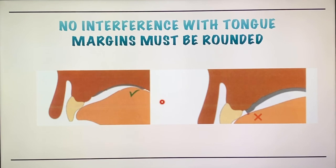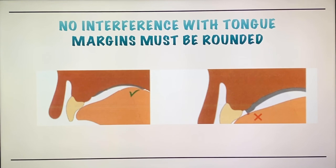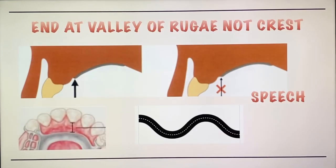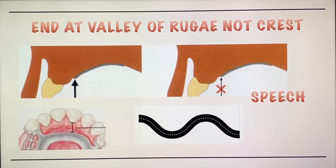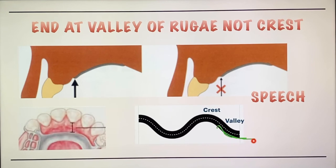There should be no interference with the tongue. Our tongue goes toward sharpness or when something is stuck — so if our assembly has sharp angles, the tongue will get constantly irritated, which we don't want. That is why the margins must be rounded. Our major connector must end at the valley of the rugae, not the crest. If possible, try not to cover the rugae because they play an important role in speech, which is very important when delivering a cast partial denture. But if you are covering them, you need to end up in the valley of the rugae, not at the crest.